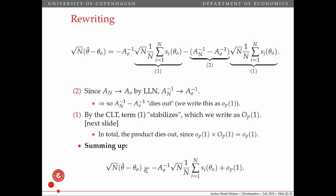So, summing up: we now have square root of n times (theta hat minus theta naught), which is what we have in the theorem. On the other side, we have something here plus little op(1).